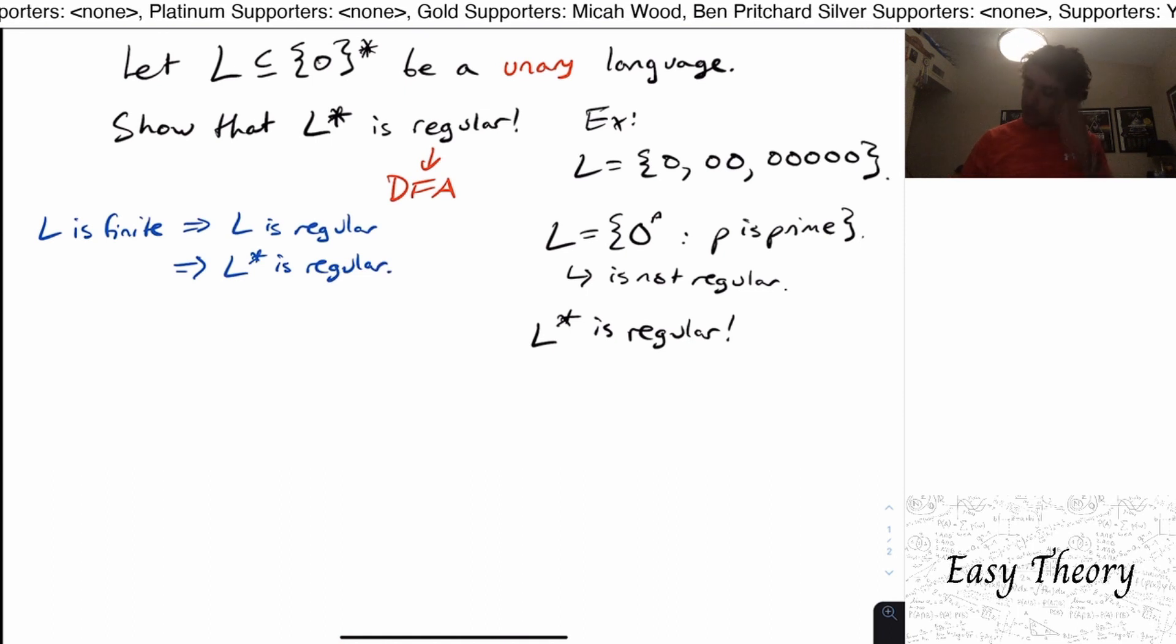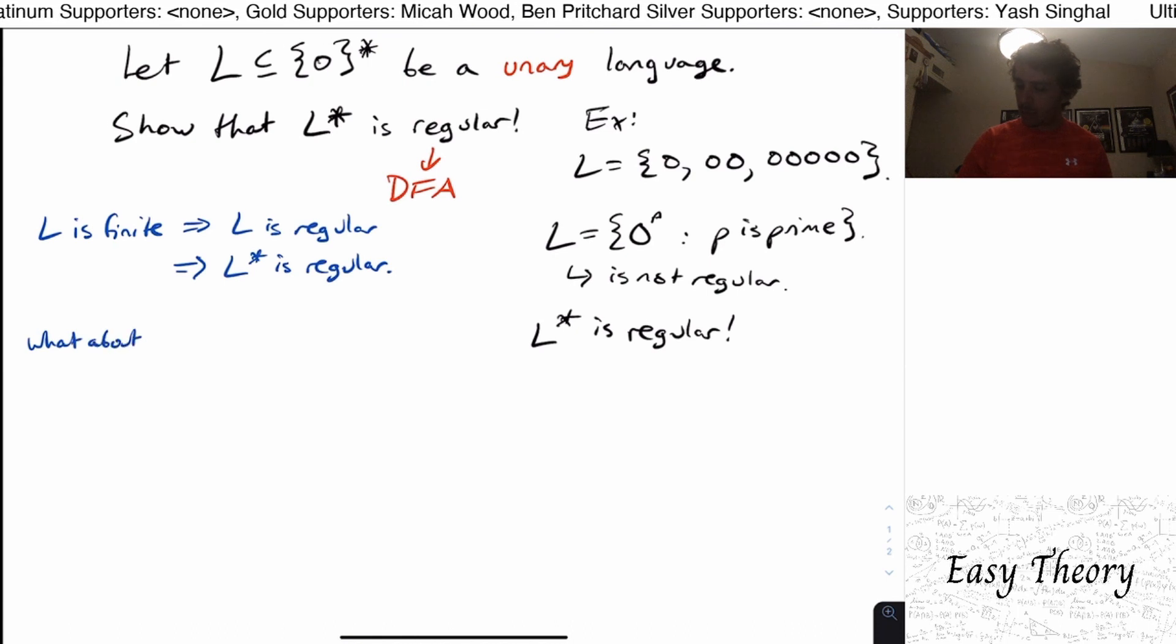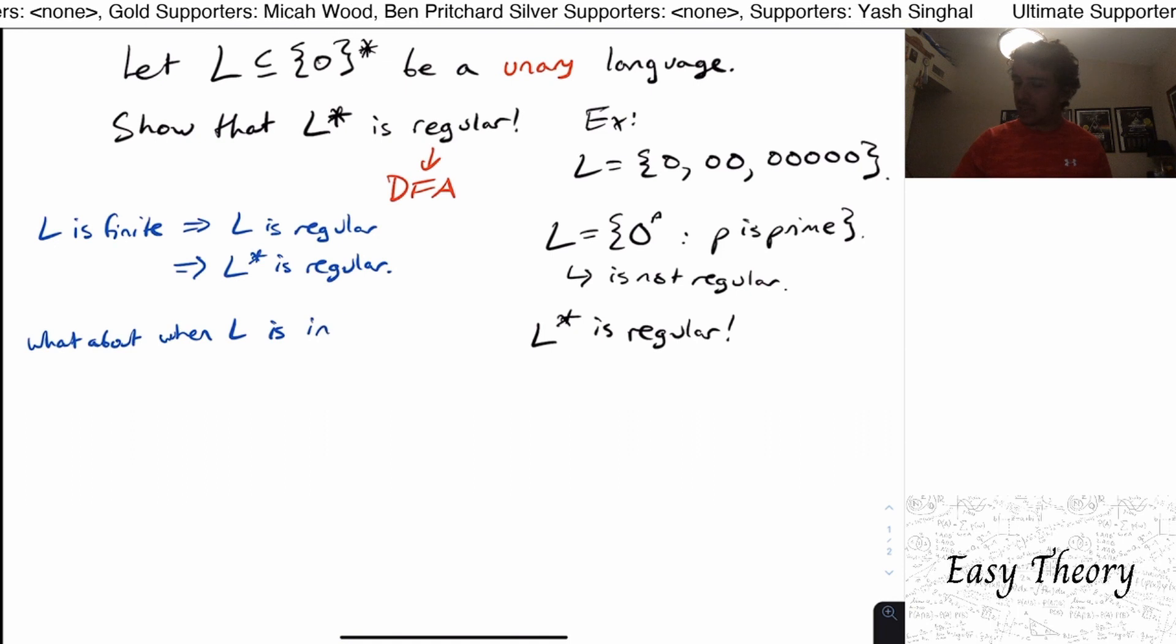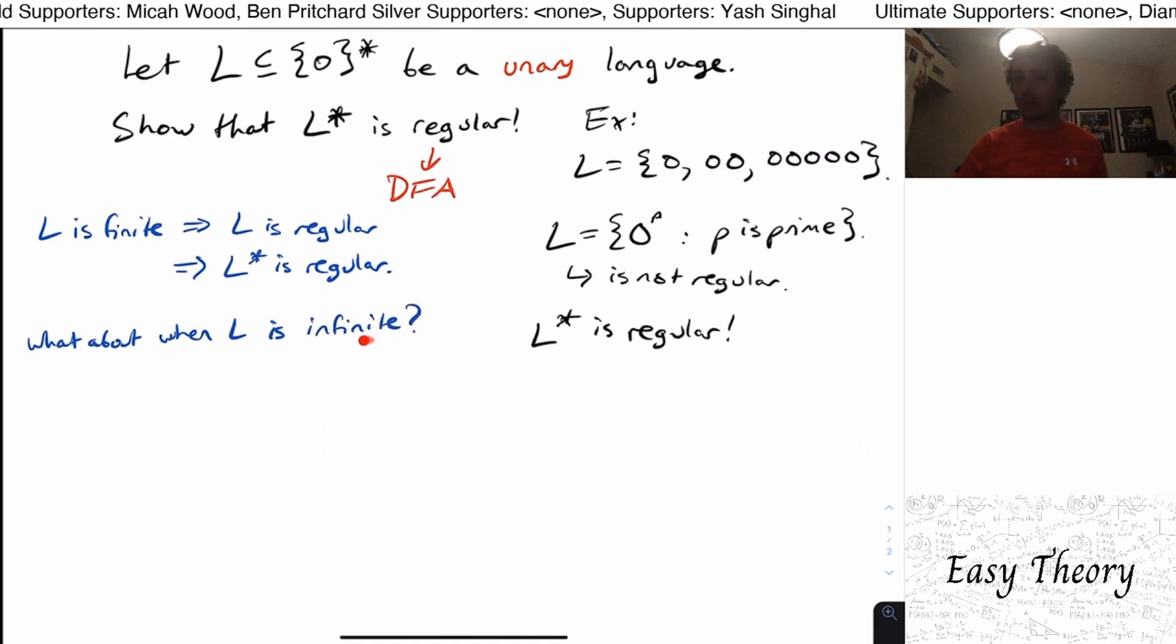So what we need to figure out is what about when L itself is infinite. Because if it's infinite, it could be regular or it might not be regular. If it's finite, then it's always regular and we get this immediately. But what about when it's infinite?